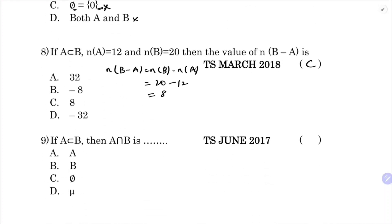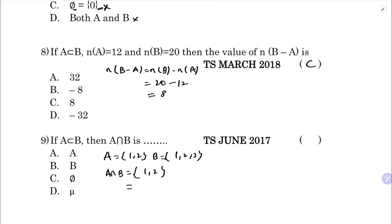Ninth question: if A is a subset of B, find A intersection B. Taking A = {1, 2} and B = {1, 2, 3}, the common elements are {1, 2}, which is nothing but A. So the correct option is A.